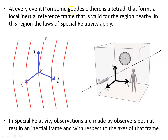At every event p on some geodesic there is a tetrad forming a local inertial reference frame valid only for the nearby local region, not for the whole manifold. In this region the laws of special relativity apply. The congruence of geodesics in red shows the timelike vector tangent to the world line, with spatial vectors carried along — here is an observer moving in spacetime with their local inertial reference frame. In special relativity, observations are made by observers at rest in an inertial frame with respect to the axes of that frame.